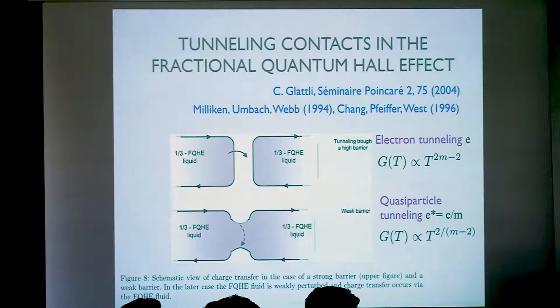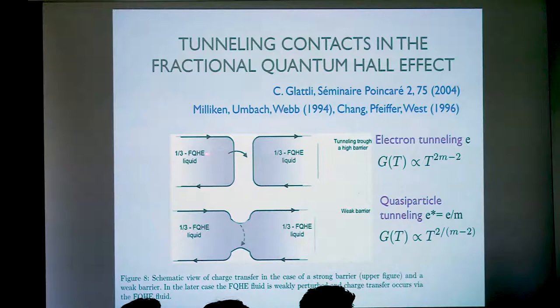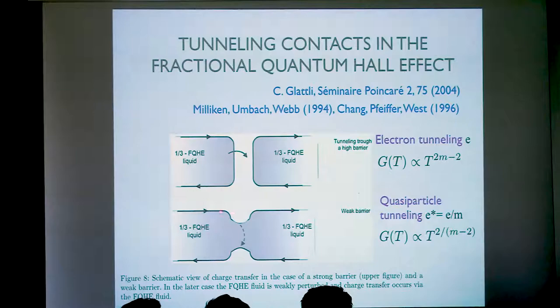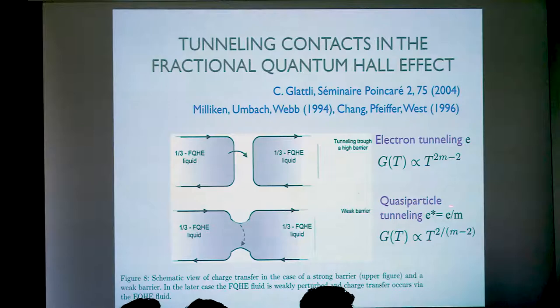The nature of the power law actually depends on the nature of the tunneling contact. If the contact is between two well-separated edge states, we have to extract an electron from the left and put it into the right, and it behaves in one way. If the contact is soft enough to enable transport of quasiparticles between the upper and lower edge states, the system behaves as if what tunnels is a quasiparticle with an effective charge of e/M.